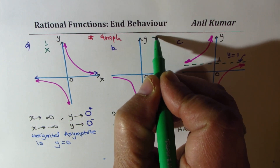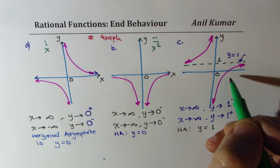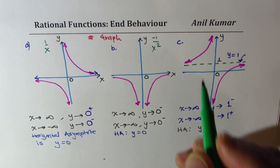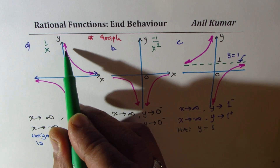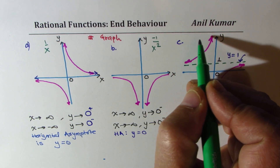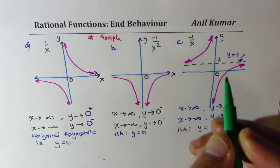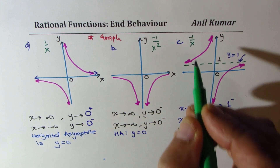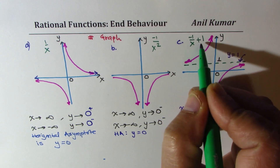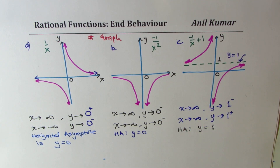These graphs correspond to functions like 1/x for Graph A, −1/x² for Graph B, and for Graph C — since it is reflected and shifted up 1 unit — the function could be −1/x + 1.